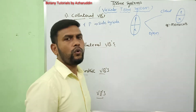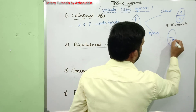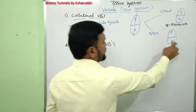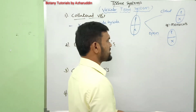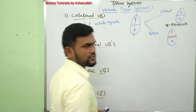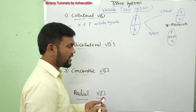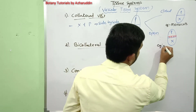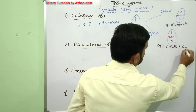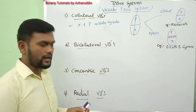Open collateral vascular bundles have cambium present between xylem and phloem. These open collateral vascular bundles are seen in dicots and gymnosperms.